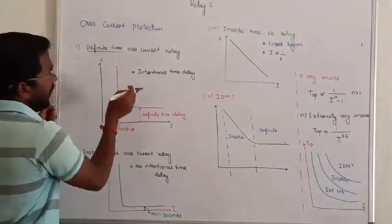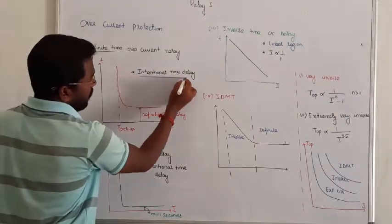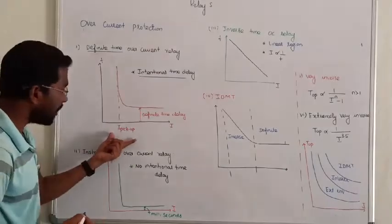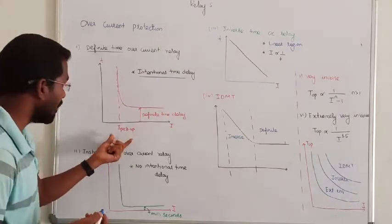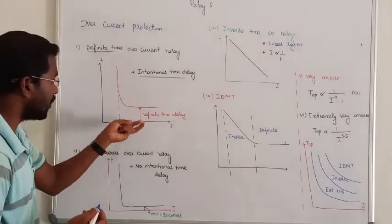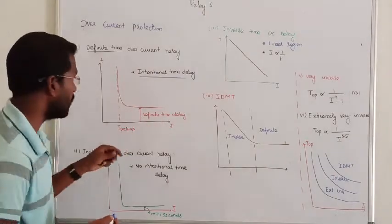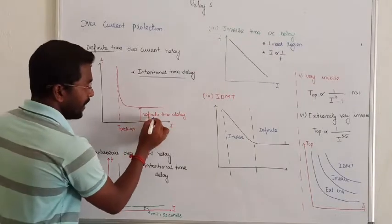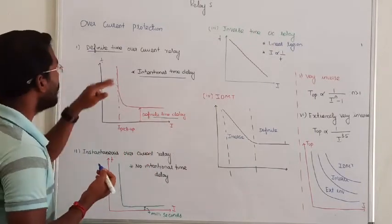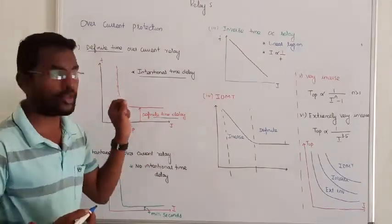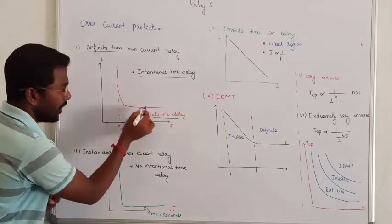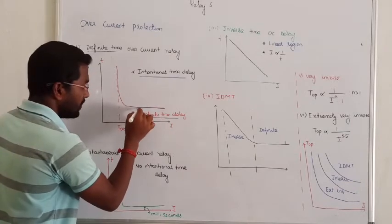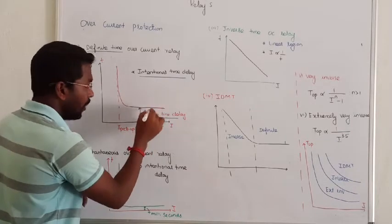There will be an intentional time delay. When the relay picks up current, the relay will operate after taking some definite time delay. That is called definite time overcurrent relay. When the current value is greater than the pickup value, it will increase in time. We have a definite time at all points.